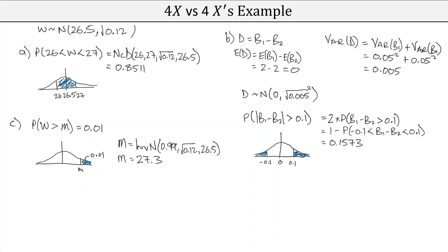Today we've looked at how to combine variables. The key takeaway is that the variance is always increasing — we would never subtract variances. Also be careful of the difference between 4X and four X's; if unsure, re-watch that section. This topic of combining variables will appear throughout the rest of the course, so we need to master it early to make light work of the topics and concepts to come.